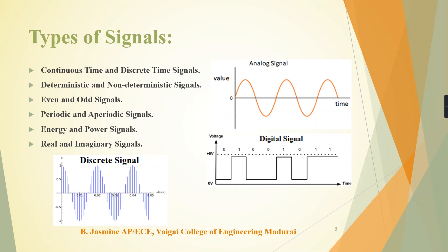For error detection and error correction, the discrete or digital signal is also more user friendly, which is why we convert the analog signal into a digital signal. The digital signal is continuous in time but not continuous in its amplitude. The discrete time signal is discontinuous in both time and amplitude.